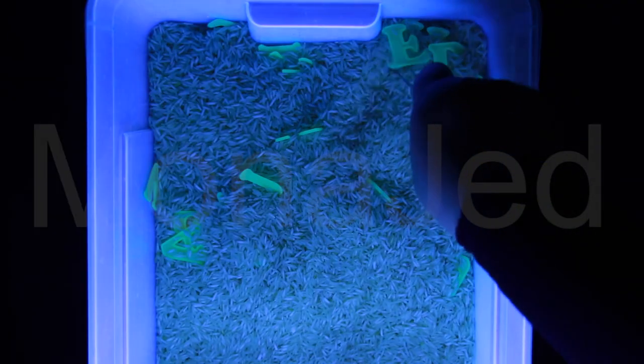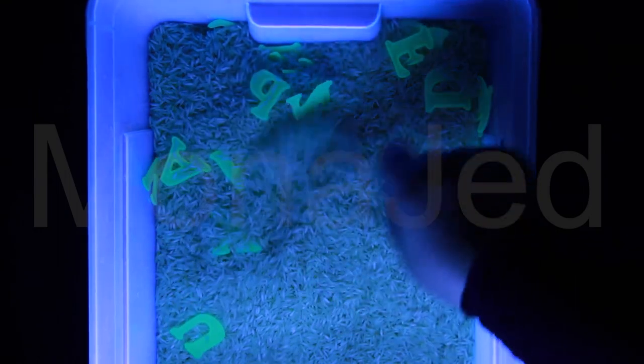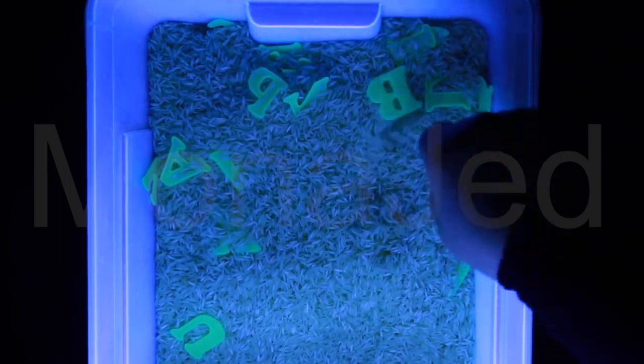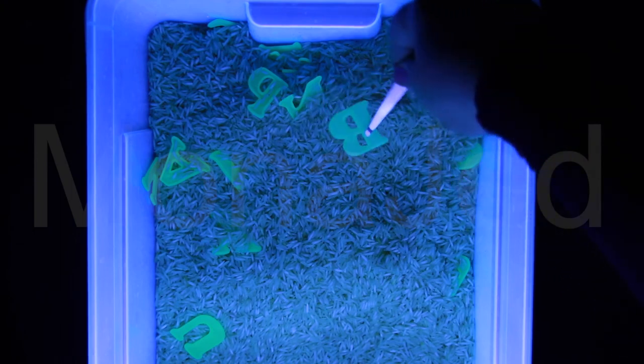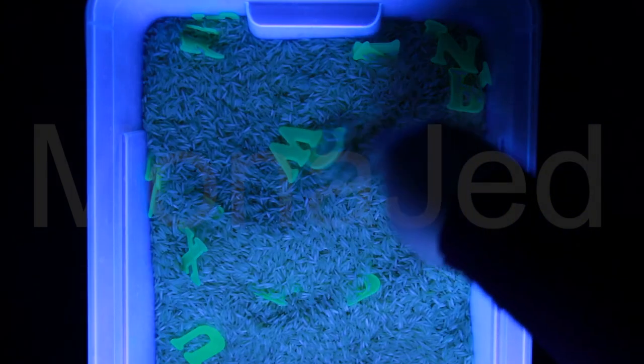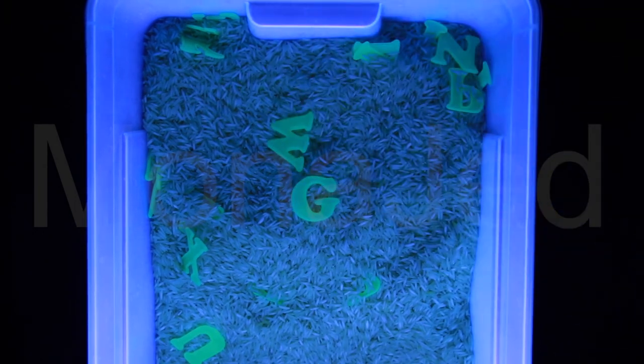Why the tweezers? To help build fine motor skills, use the tweezers to sift through the rice and locate each letter. It's a good way to pace the speed at which each letter is discovered. If you use your hands, you would more likely uncover multiple letters which could be quite distracting and take away from the learning purpose.